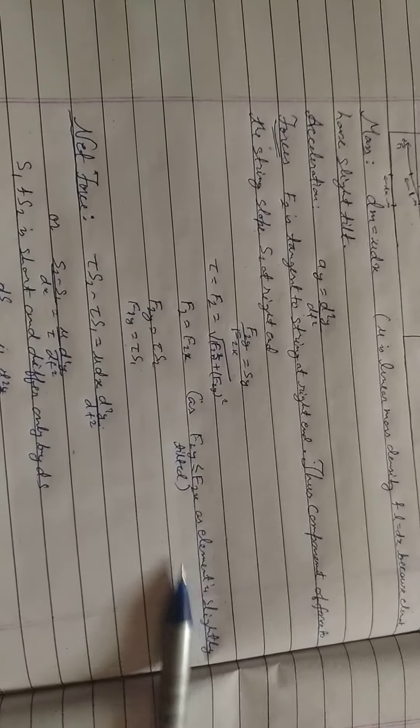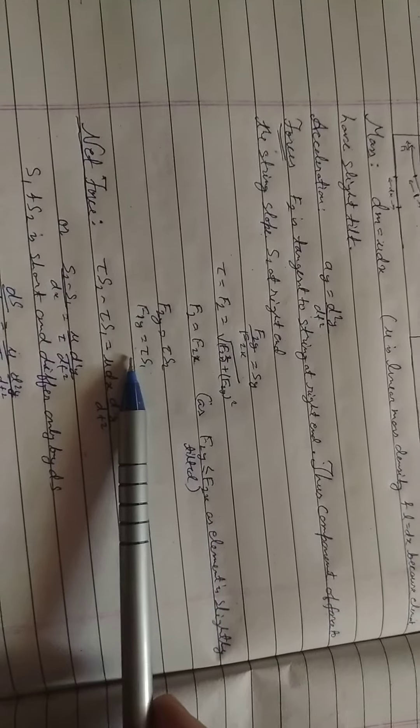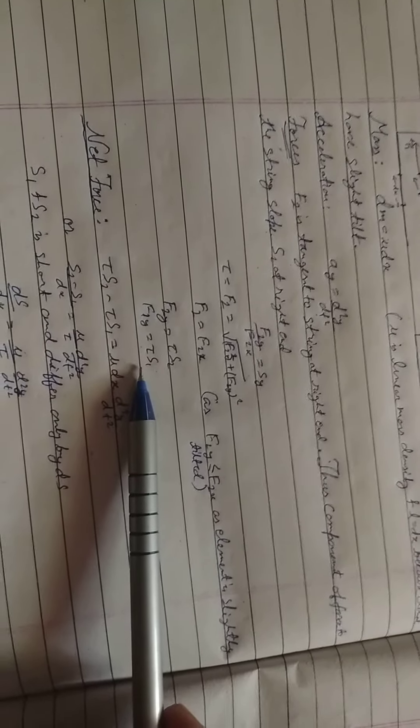As the element is slightly tilted, f2y is equal to tau s2, and f1y is equal to tau s1.